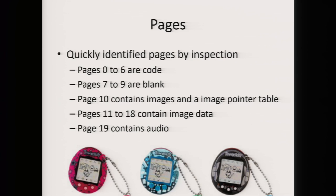Looking at the pages quickly, I could figure out what they all were. Pages 0 to 6 were code. Pages 7 to 9 were unused. Page 10 contained a pointer table for images. Pages 11 to 18 contained images, and I don't know what page 19 contains, but I'm figuring it's audio — because where else would the audio be?